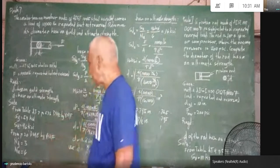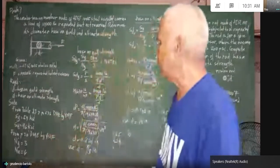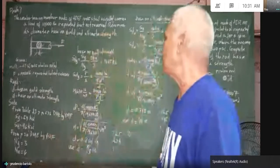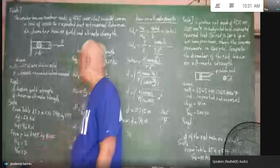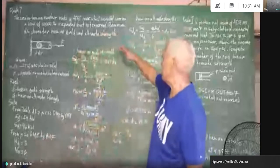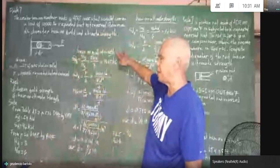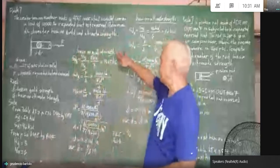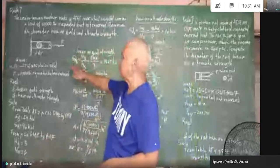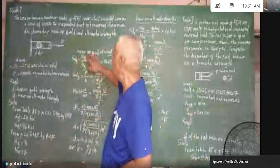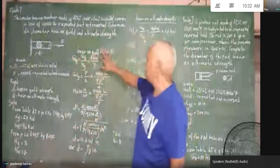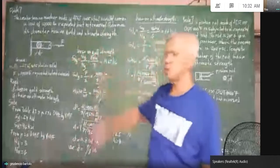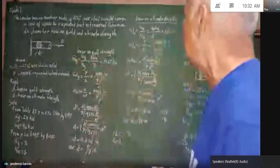From page 20 of Design of Machine Elements by Virgil Moring Faires, for a repeated but not reversed load, the factor of safety based on yield is 3 and the factor of safety based on ultimate is 6. For the design phase based on yield strength, the design stress S_dy equals yield strength over factor of safety: 59 KSI divided by 3, giving us 19.67 KSI.